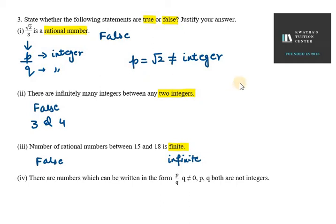Let's do question number 4. It says there are numbers which can be written in the form of p by q, where q is not equal to 0 and both p and q are not integers. This is true. We can write numbers in the form p by q where p and q are not integers — for example, under root 3 over under root 5.